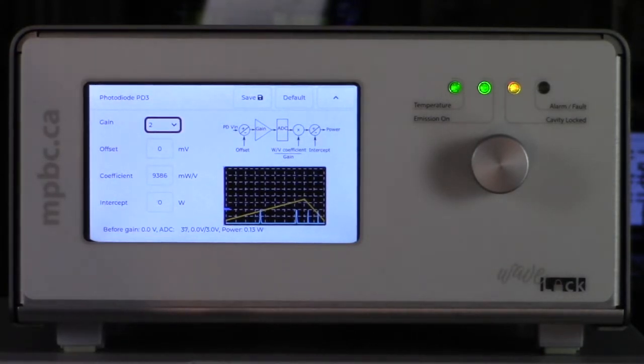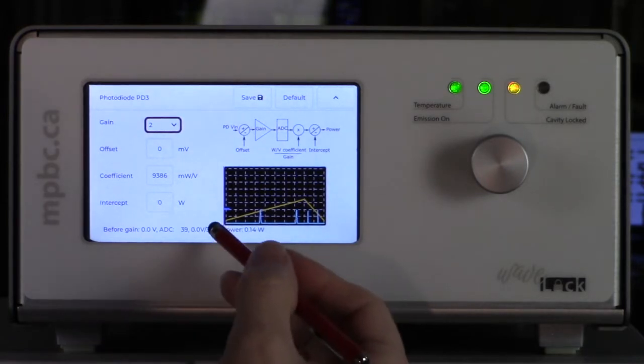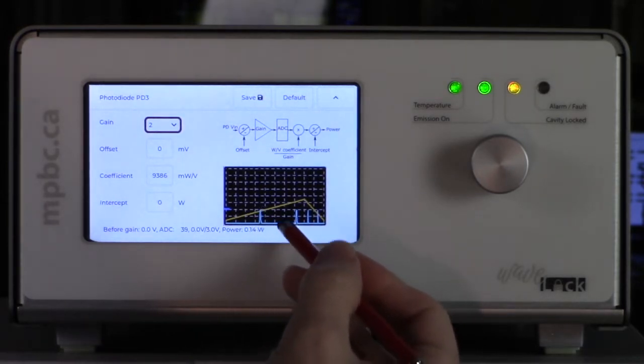So here we are in scanning mode, you see the yellow line going up and down, that is the piezo voltage. And here in light blue we see the photodiode.